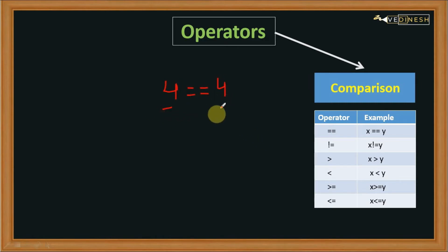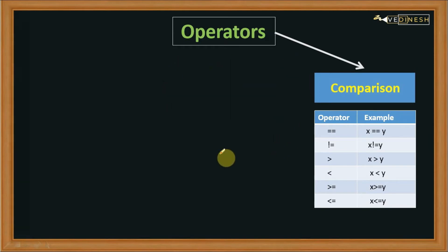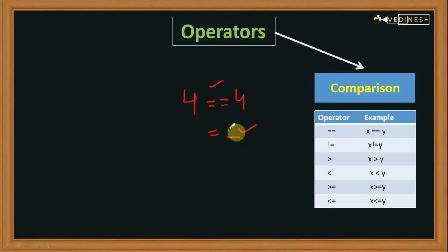For example, can I say four is equals to four? Yes, because both the values are same. I am comparing this value with this, and if both values match then it returns true, otherwise it returns false. Please don't confuse the double equals to operator with the single equals to operator — the single equals to is an assignment operator that assigns the value on the right hand side to the left hand side.